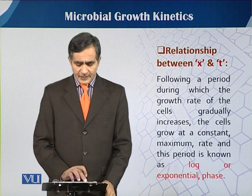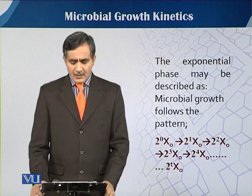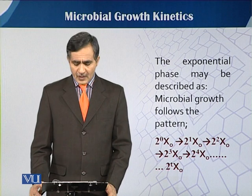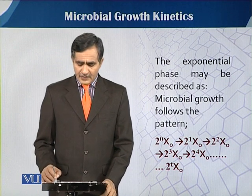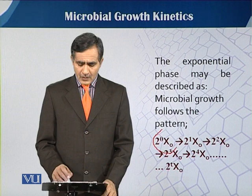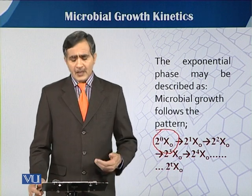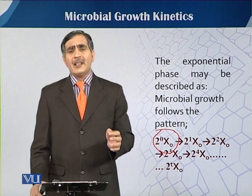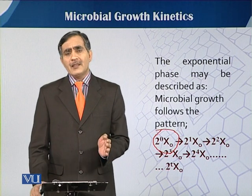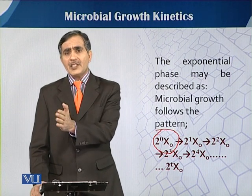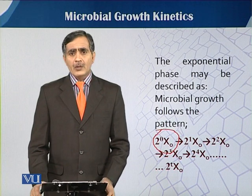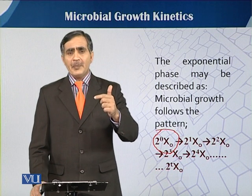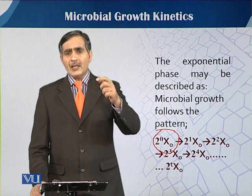The exponential phase may be described as the microbial growth pattern. You can see here this simple formula: 2 times x-naught, where x-naught is the amount of biomass which we add as the inoculum. There are different multiplications — different generations — meaning if 1 cell becomes 2, then in the same period 2 becomes 4 and 4 becomes 8.